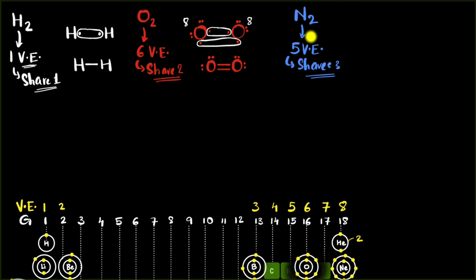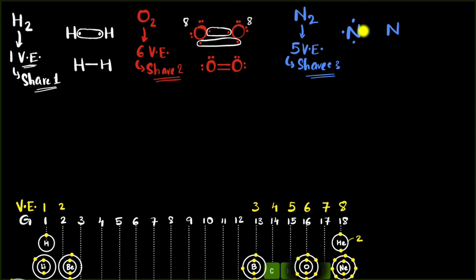So nitrogen shares three electrons. If it can find another atom that can share three electrons, it will happily bond with them — that's why it bonds with itself. We draw the five valence electrons. Just by looking at the dot structure, you can see there is one pair and three lonely electrons which would love to participate in bonding. That's why it shares three electrons.